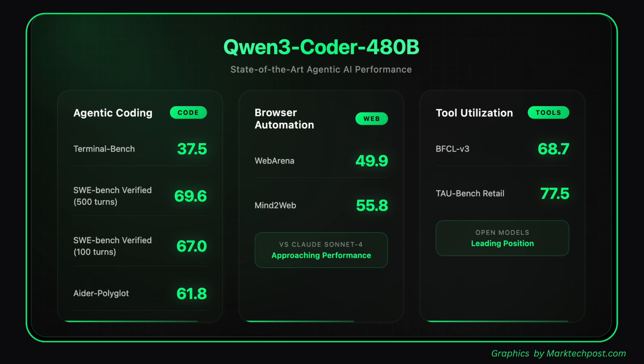It also achieves 61.8 on Aider Polyglot and 54.7 on SWE Bench Multilingual, with strong scores on SWE Bench Live and Multitask Benchmarks, demonstrating robust autonomy and reasoning. In agentic browser use, Qwen3 Coder leads open models with 49.9 on WebArena and 55.8 on Mind2Web.